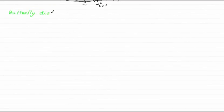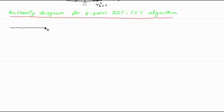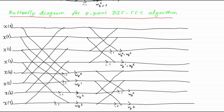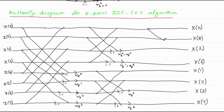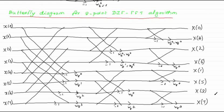Now let us draw the butterfly diagram for the 8-point DAF FFT algorithm. This is the diagram we have seen in the first and second stage of decimation. Now let us include the third stage of decimation. Therefore, we have derived the butterfly diagram for the 8-point DAF FFT algorithm.